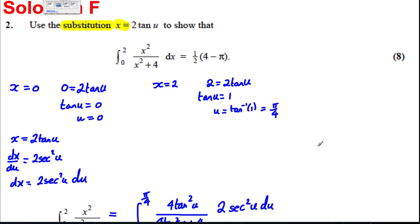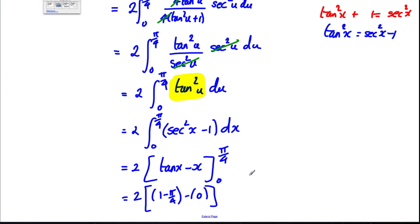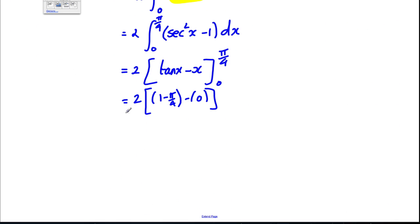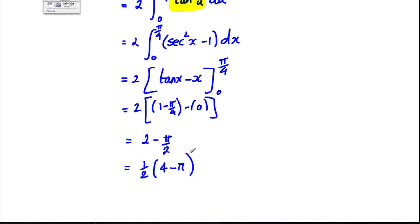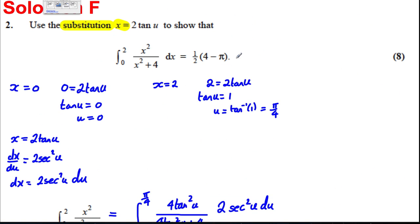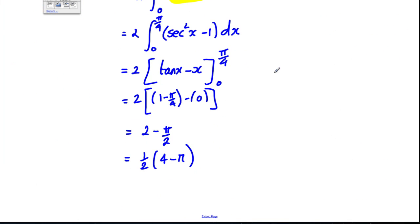So, this turns out to be the same thing as two subtract π over two. And in the answer, we're asked to factorize out a half. If I factorize out a half, dividing by half, that would be four and that would simply be π. So, it's a half (four subtract π) which is what we were looking for in the question and we're done.